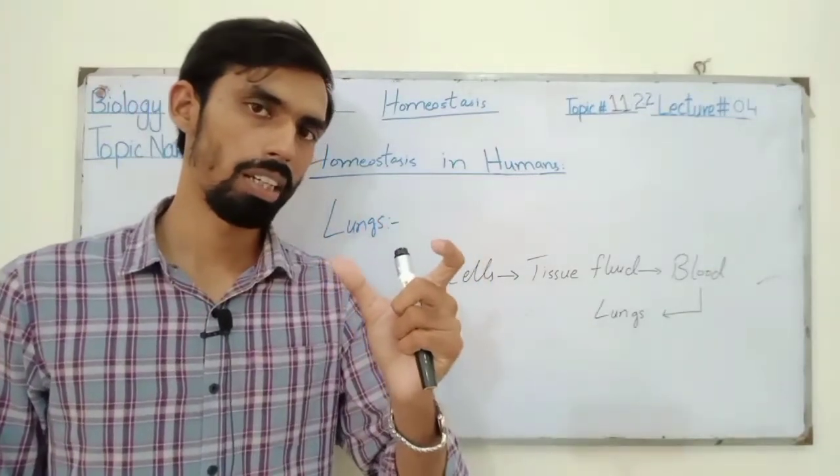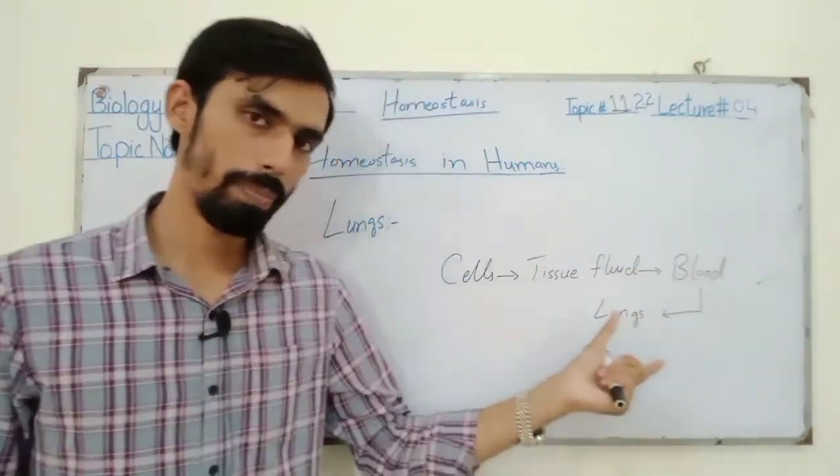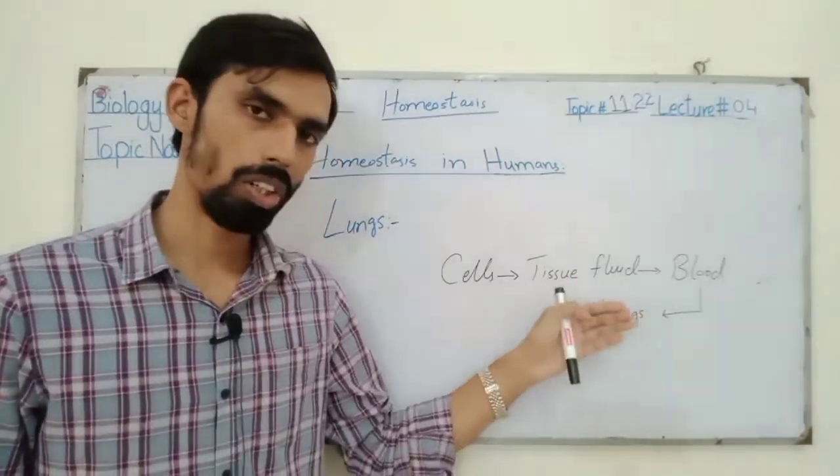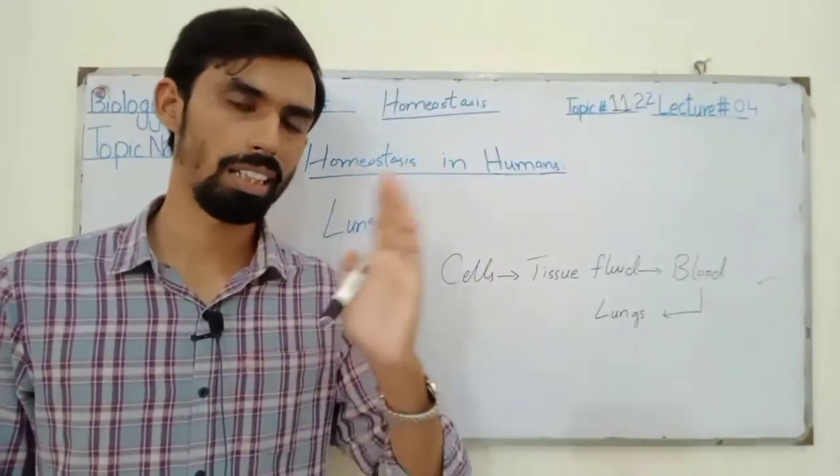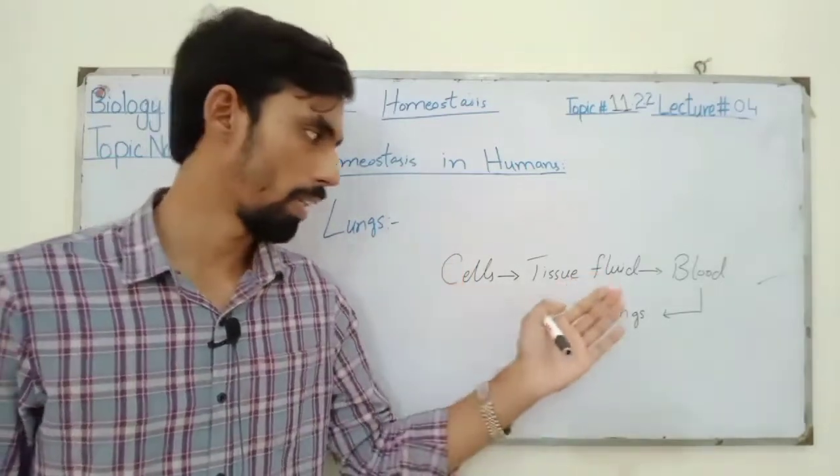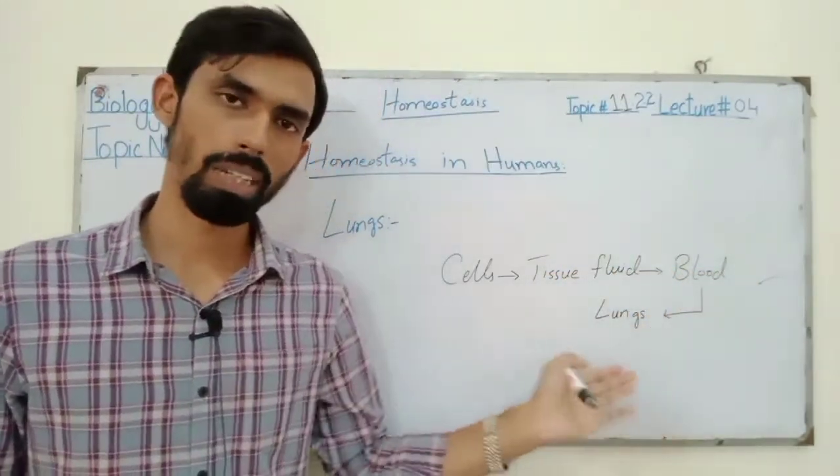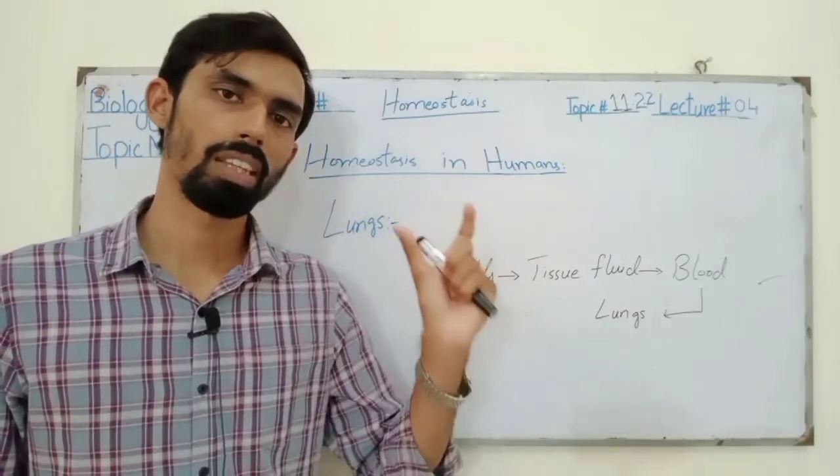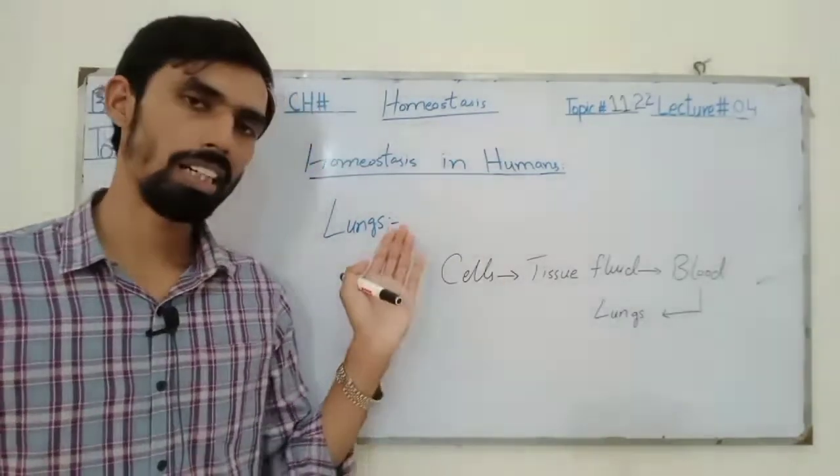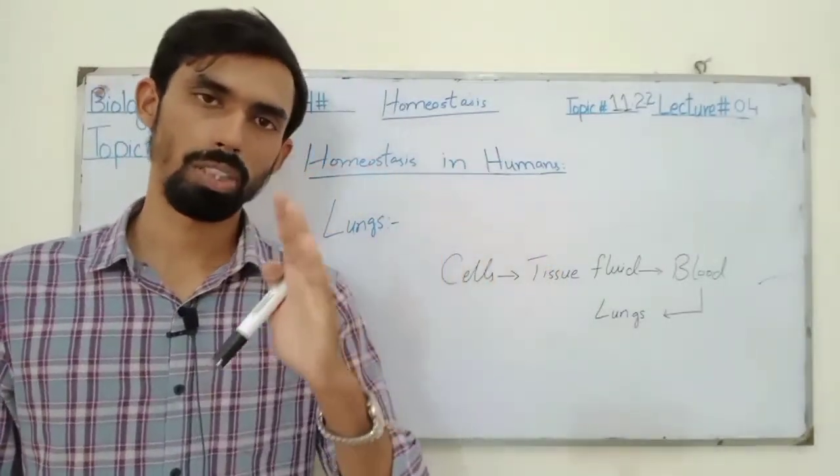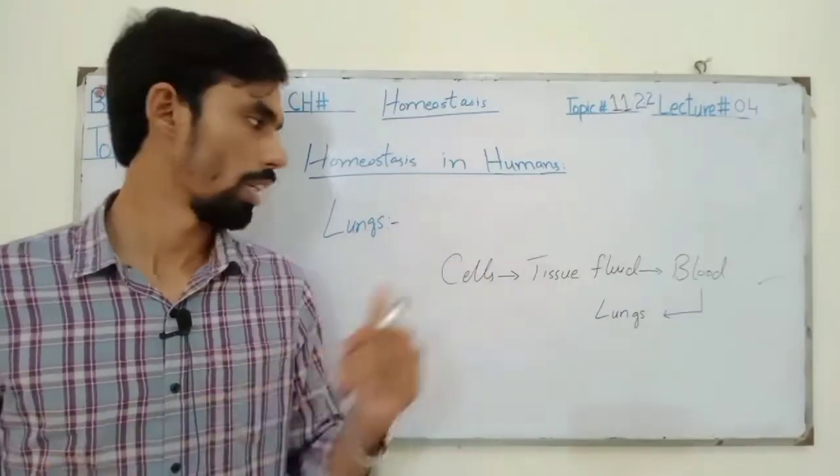Blood carries carbon dioxide from the body. When blood with carbon dioxide comes to lungs, it is expelled from the body and moves out. So lungs maintain homeostasis in the body by removing excess quantity of carbon dioxide out of the body. So this is the function of lungs.